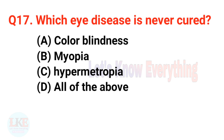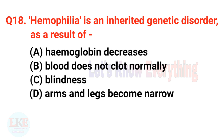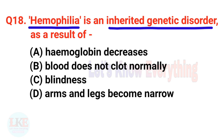Question number seventeen: which eye disease is never cured? A) Color blindness, B) Myopia, C) Hypermetropia, D) All of the above. The right answer is option A, color blindness — it is a genetic disorder that is never cured. Question number eighteen: haemophilia is an inherited genetic disorder in which blood does not clot normally.